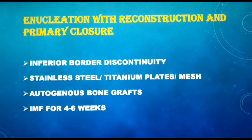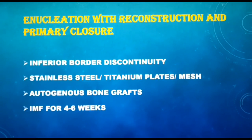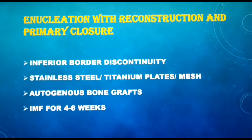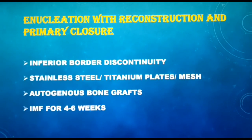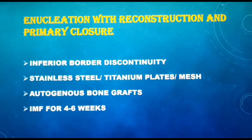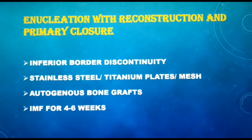The third type of enucleation is followed by reconstruction and then primary closure. This technique is employed where aggressive enucleation has led to inferior border discontinuity of the mandible or a fracture of the surgical site. A stainless steel or titanium plate is used to fix the fracture, and a titanium mesh or autogenous bone grafts — for example, iliac crest or costochondral graft — may be placed to reconstruct bone defects. Reconstruction requires intermaxillary fixation for about 4 to 6 weeks before a functional load can be applied. Thus we have discussed the principles, indications, advantages, disadvantages, various types, and steps of enucleation.